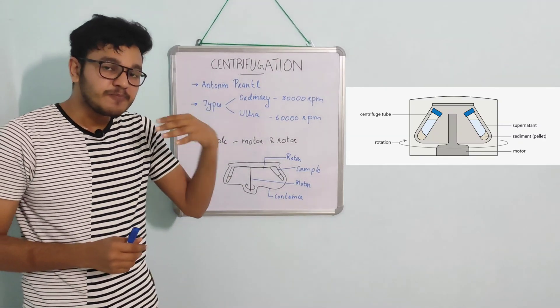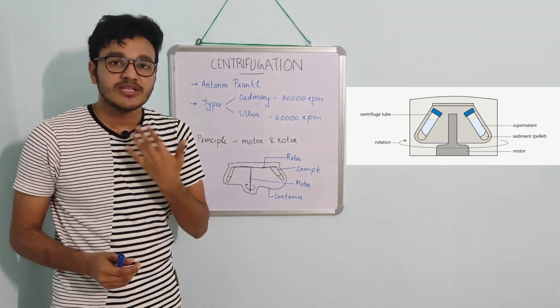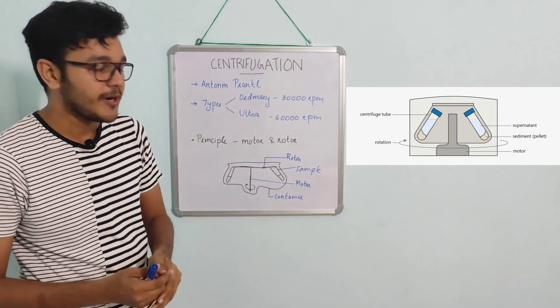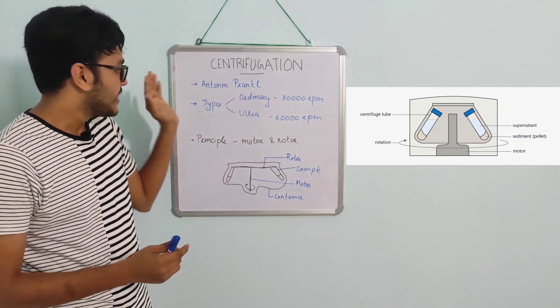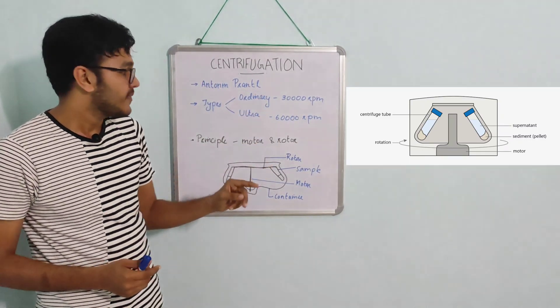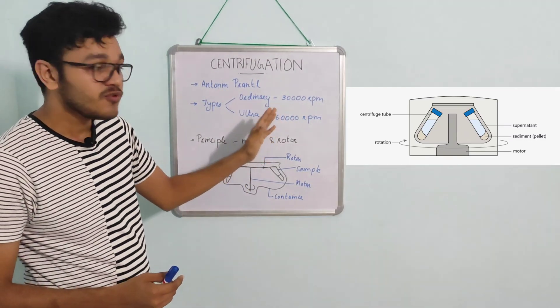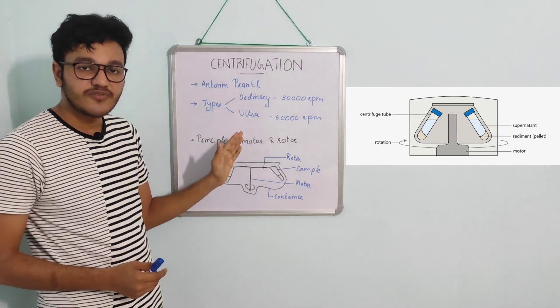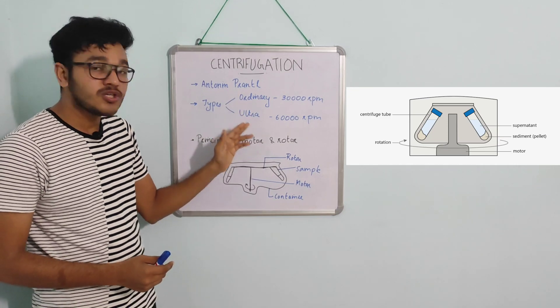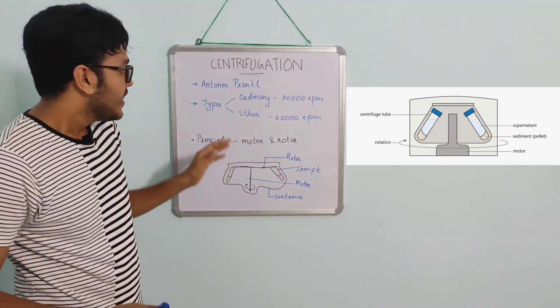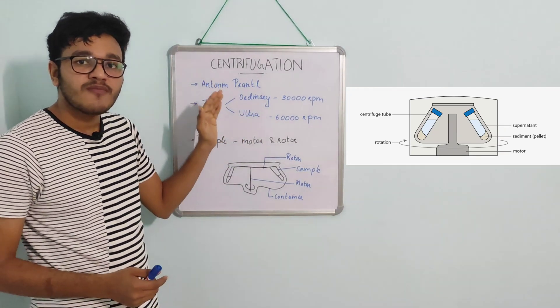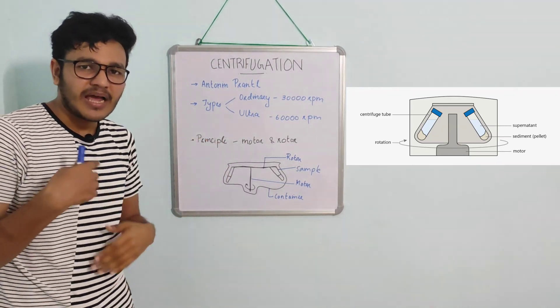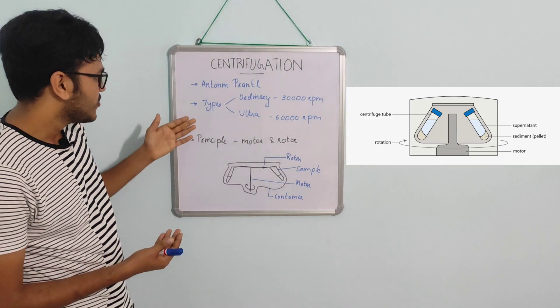The speed of rotation in centrifugation is expressed in RPM, that is revolution per minute. According to the speed, centrifugation is divided into two types. The first one is ordinary centrifuge, that has a speed up to 30,000 RPM. The next one is ultracentrifuge, which has its speed equal to or greater than 60,000 RPM. Ordinary centrifuge is common in school labs and college labs, but in highly sophisticated labs and biotechnology, ultracentrifuge is used.